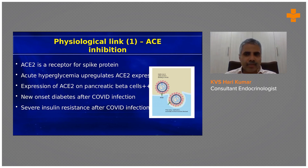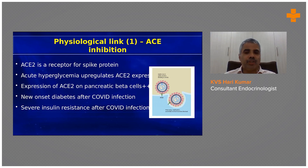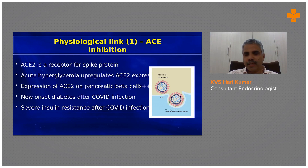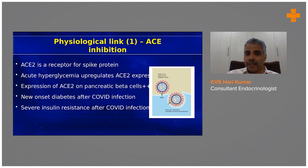One of the first physiological links between COVID and diabetes involves the ACE2 receptor — the angiotensin-converting enzyme 2 receptor. The COVID virus's spike (S) protein binds to ACE2 to gain entry into cells. Critically, hyperglycemia upregulates ACE2, meaning higher glucose levels increase the number of ACE2 receptors on the cell surface, allowing greater viral load entry into the body.